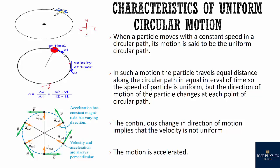This continuous change in direction implies that the velocity is not uniform — velocity is changing at each point. So the motion is accelerated. Why accelerated? Because acceleration is change in velocity: (V2 - V1) / T. There is a change in velocity at each point, so there is an acceleration at each point. In uniform circular motion, the acceleration has constant magnitude but varying direction.